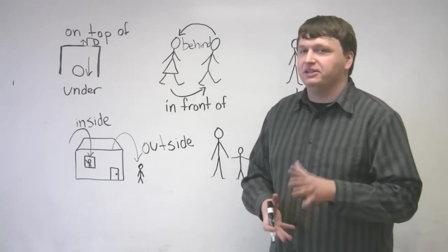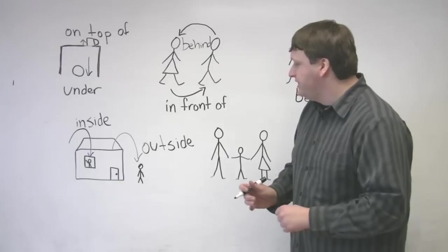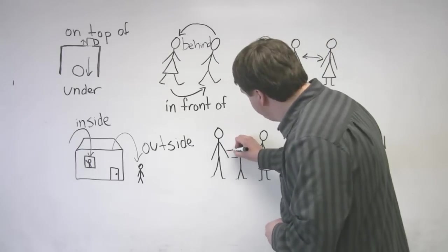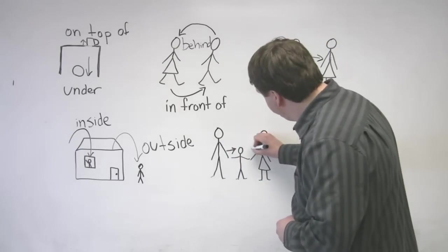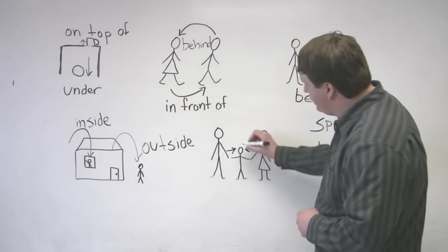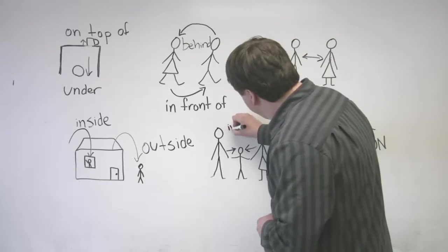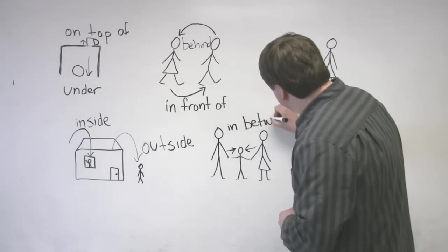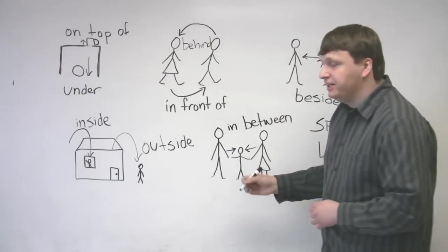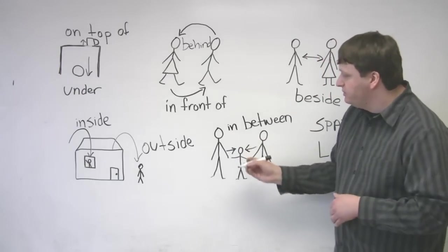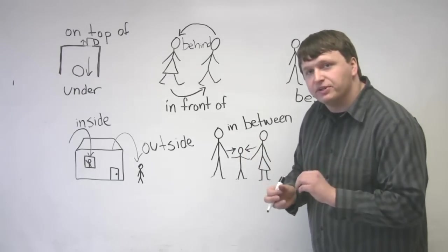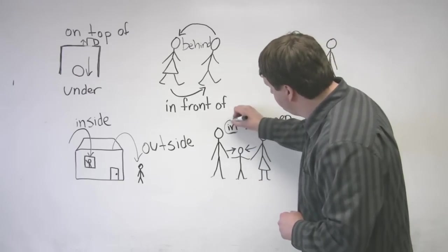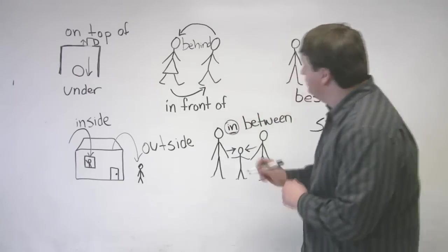But we don't say the child is in the middle, the parents. We say the child is between the parents. So we can show that by having the arrows pointing to the middle. So the child is in between. You can actually just say between. You can say in between, or the child is in between the parents, or the child is between the parents. So this right here is, I would say, optional.